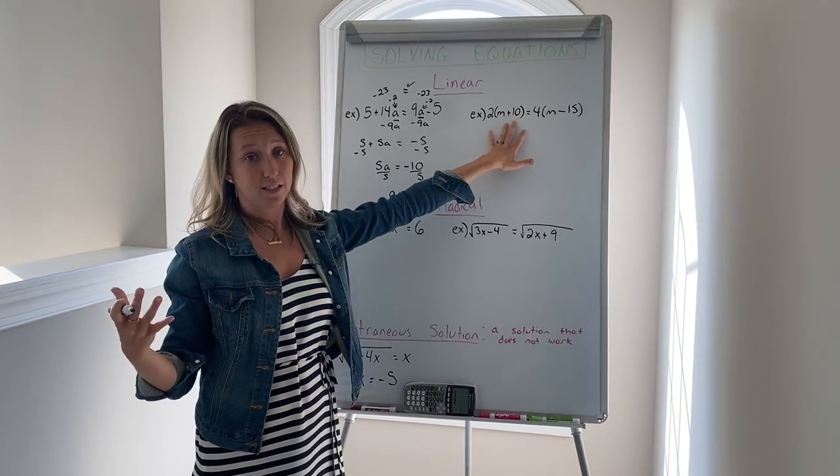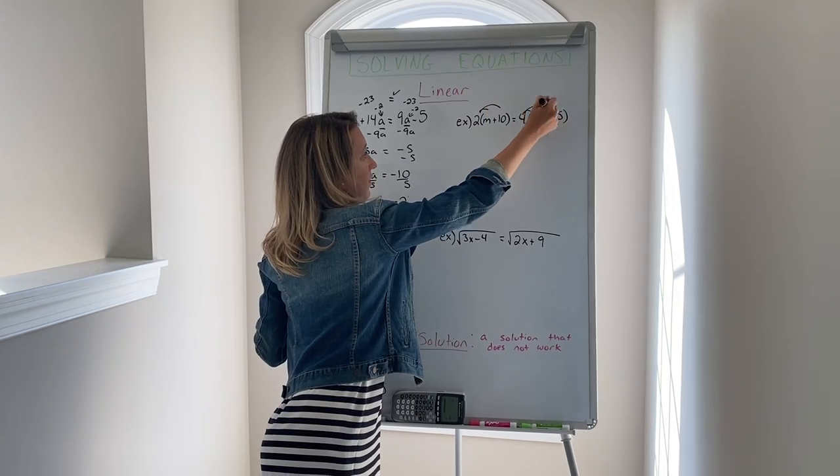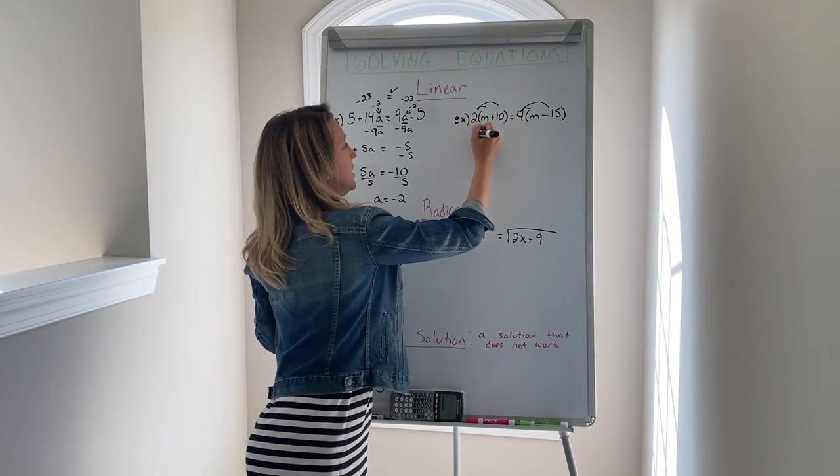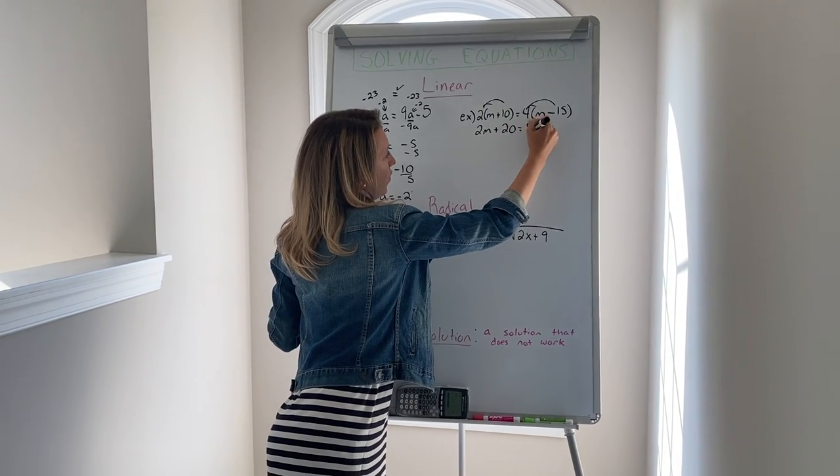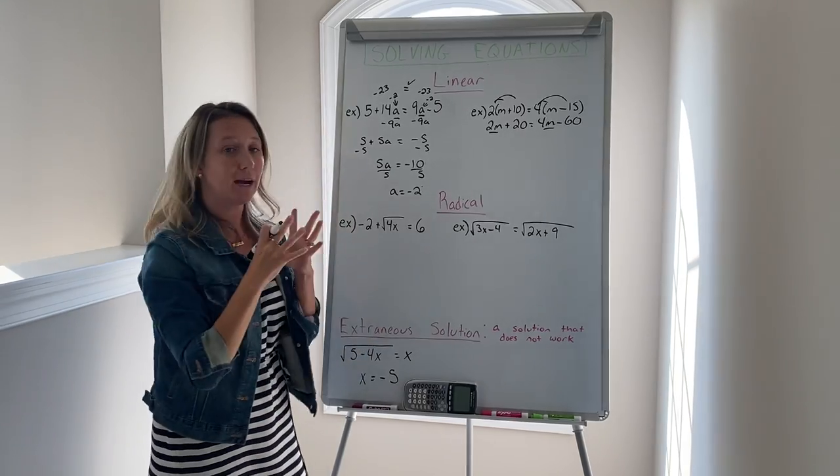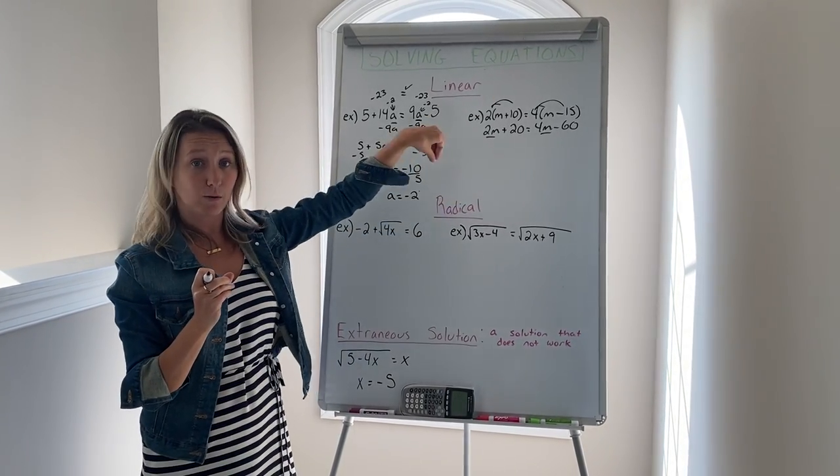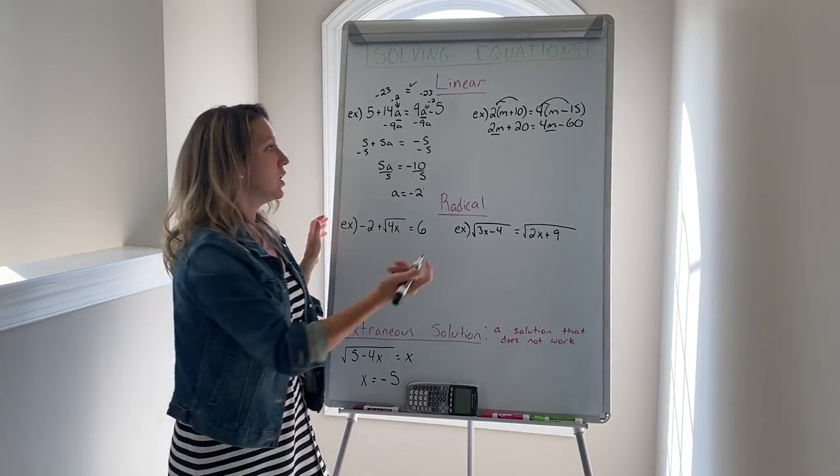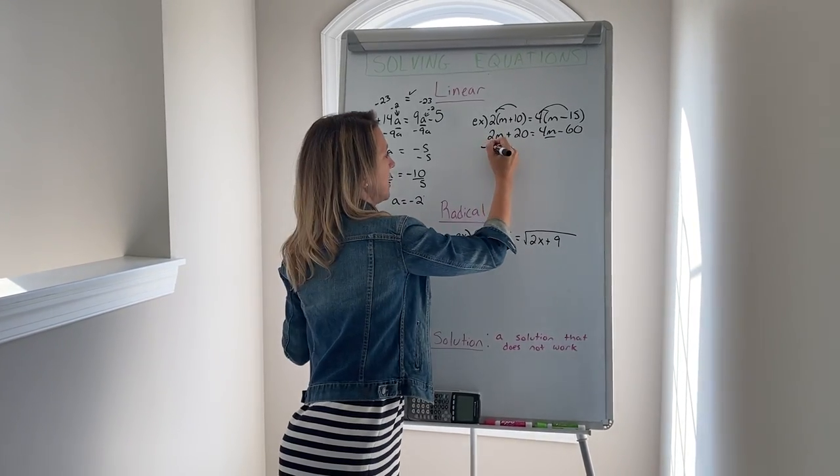Same thing here but we have parentheses. To get rid of the parentheses we first have to distribute the number on the outside. So this would be 2m plus 20 equals 4m minus 60. Now same thing, we want to combine our like terms. We have to move the m to one side and the constant without a variable to the other side. I'm going to choose to subtract 2m because it's positive 2m so opposite sign would be subtraction.